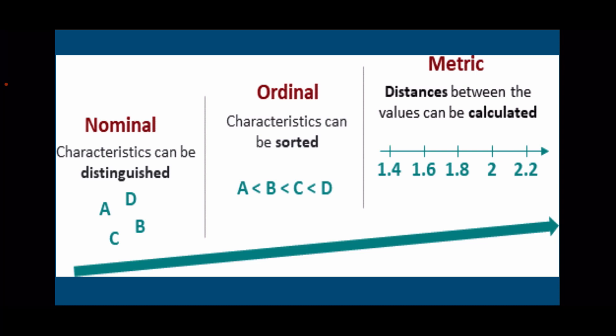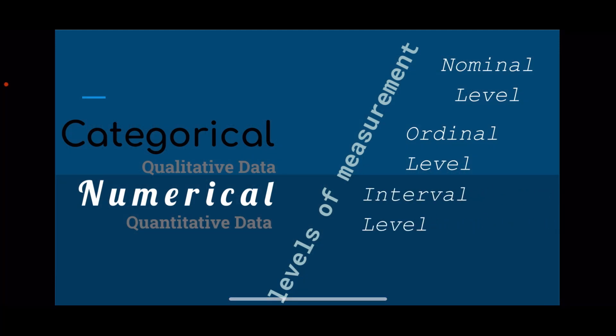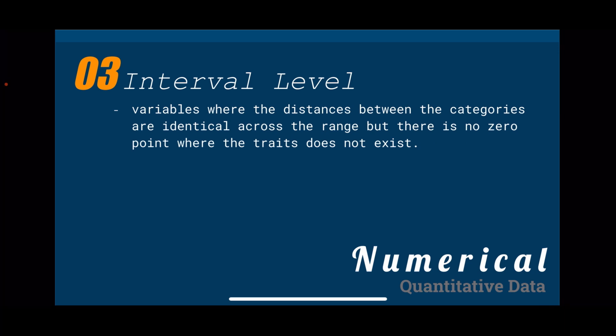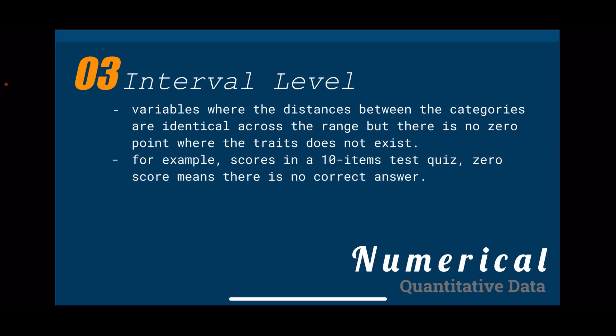The next level is metric. The distances between values can be calculated, so in metric you can identify specifically how large the distance is between two characteristics. In ordinal, you know that A is smaller than B and B is smaller than C, but you don't know how large the difference is between the two. Meanwhile, in metric, you can calculate it. A metric variable is a variable measured quantitatively. Interval data can have metric measurement. By definition, interval variables are those where the distances between categories are identical across the range, but there is no zero point where the trait does not exist. For example, scores on a 10-item test quiz — a zero score means there are no correct answers. You can categorize, rank, and infer equal intervals between neighboring data points, but there is no true zero point.